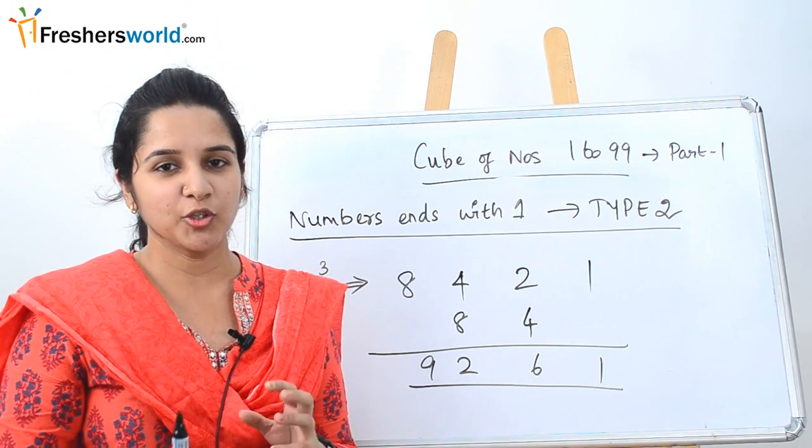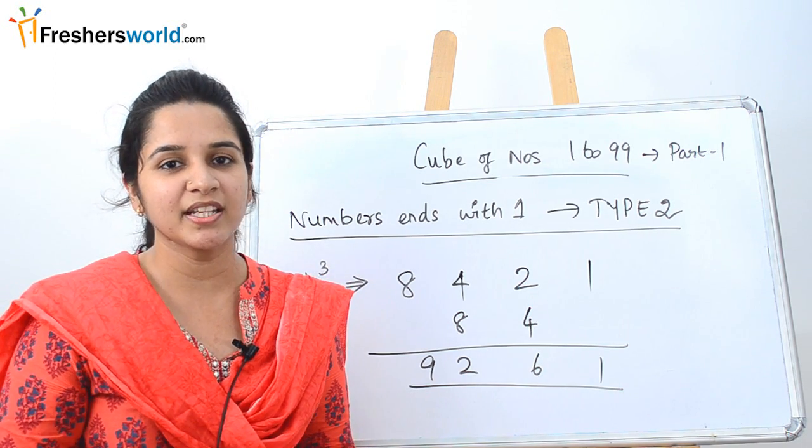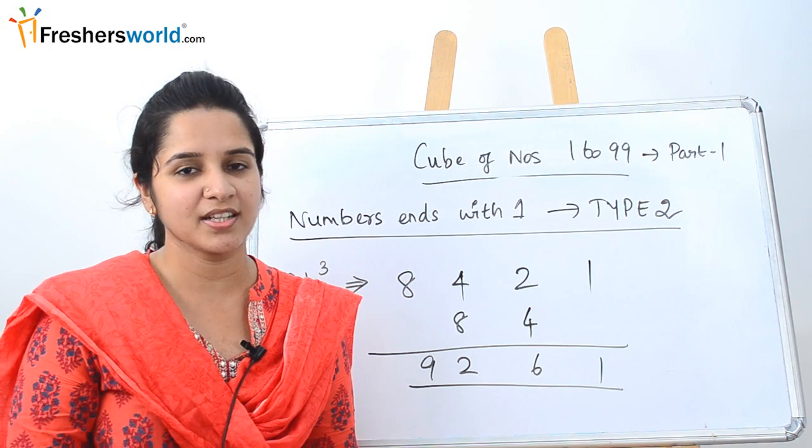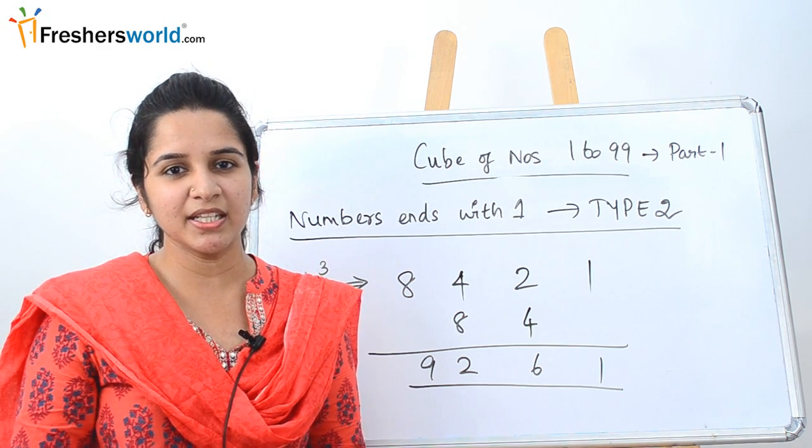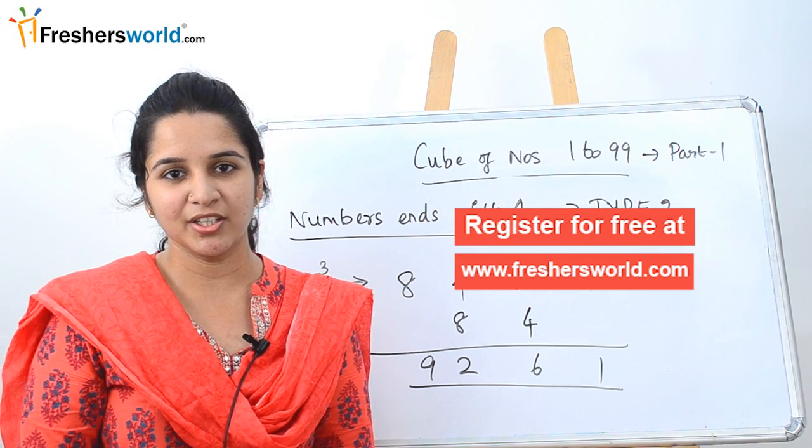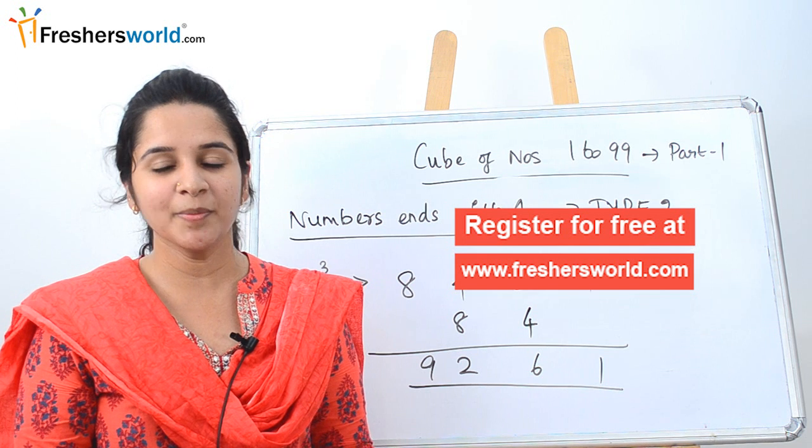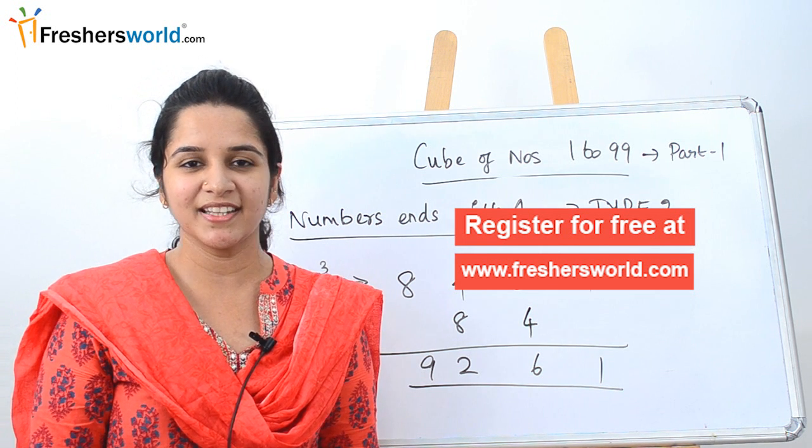In part 1 of cube of numbers from 1 to 99, we solved two types: one is a number that ends with 1, and one is a number that starts with 1. In the next part we will be dealing with same numbers and different numbers. To understand that concept better, keep watching our video. If you are looking for a job, kindly register on freshersworld.com. Like this video, subscribe to our channel. Thank you.